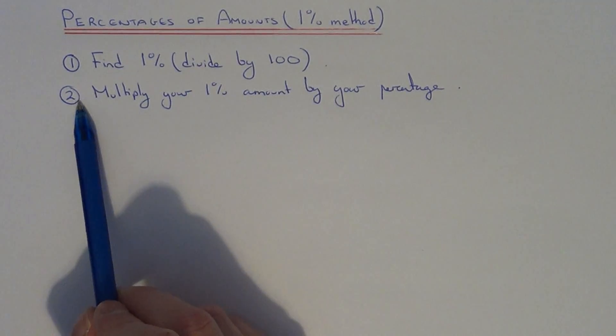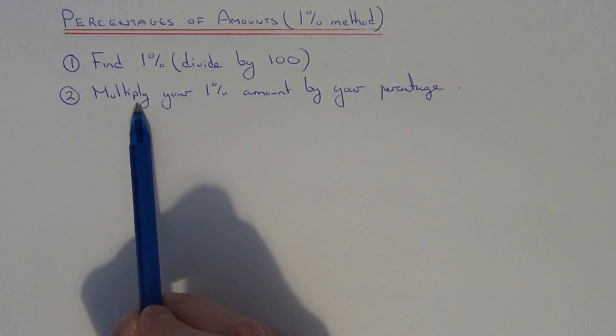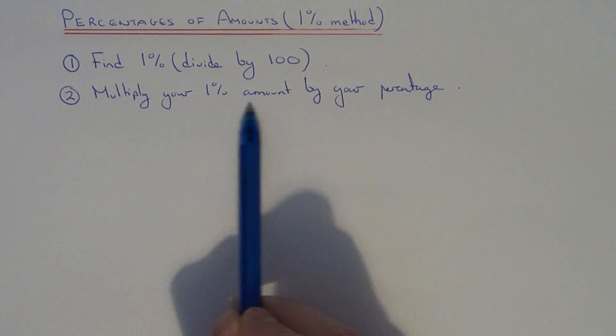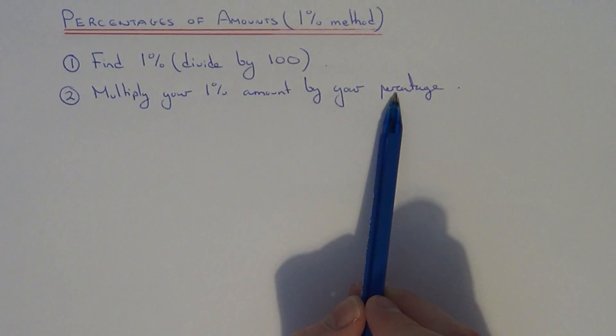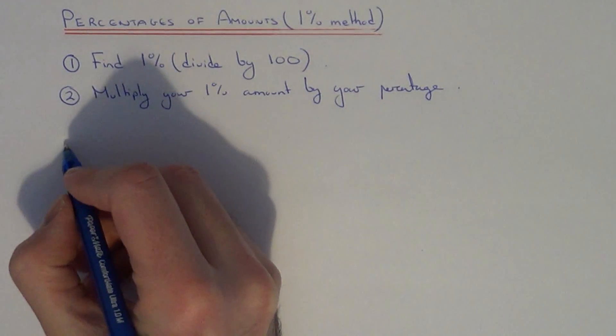The second step is once you have the 1% amount, you can multiply this amount by the percentage which you are finding. So let's apply this in an example.